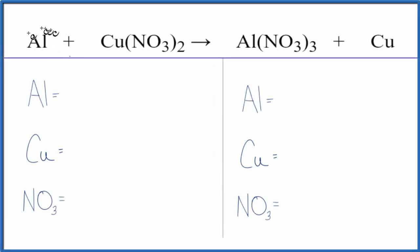In this video we'll balance the equation for Al plus Cu(NO3)2. This is aluminum plus copper 2 nitrate. We're going to use a bit of a trick to make this easier. I'll show you how we do that.